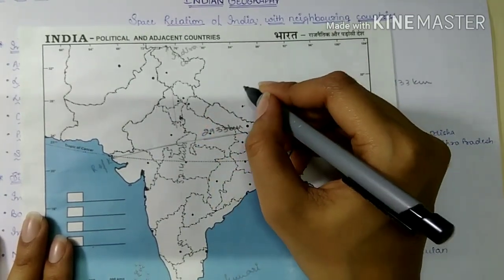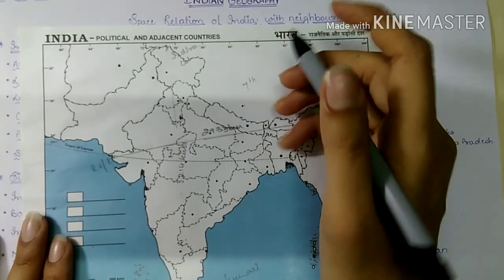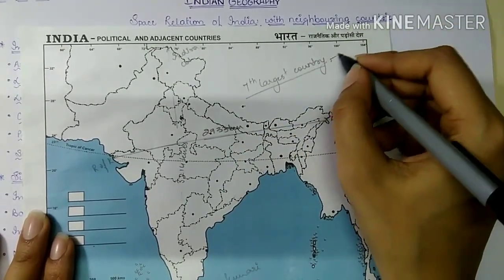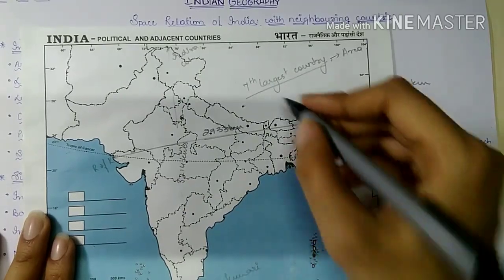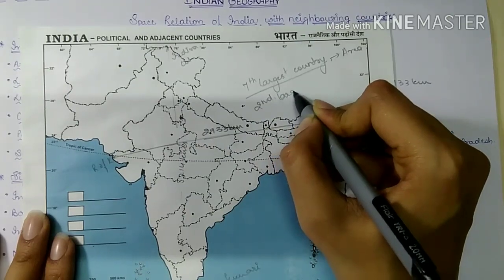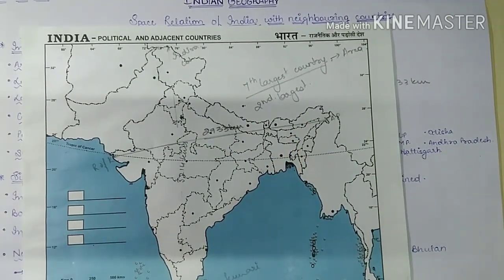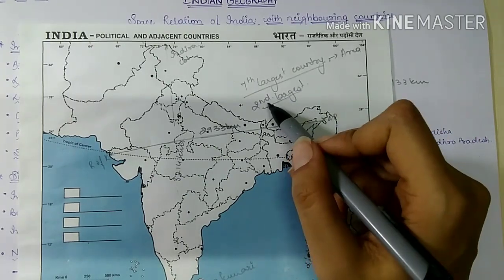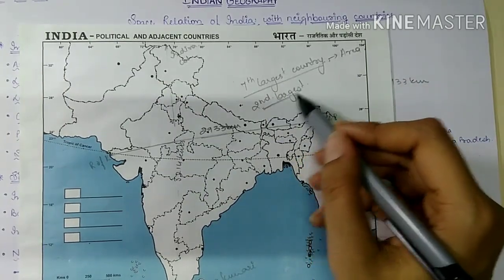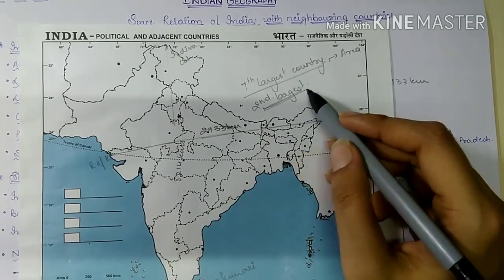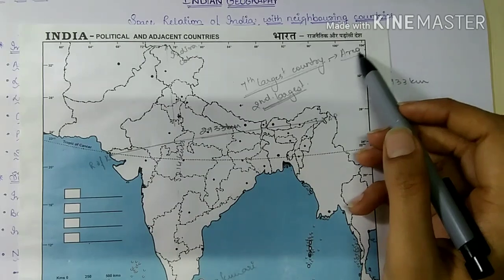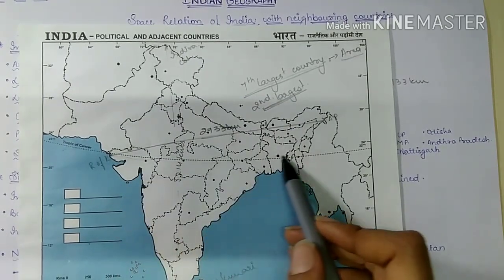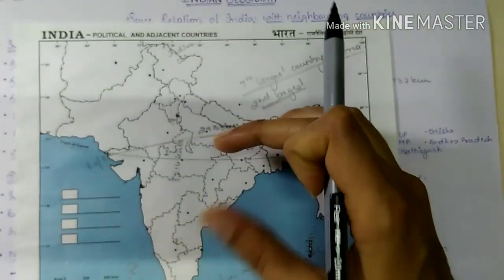Because of its area, India stands as the 7th largest country in the world. According to population it is the second largest, just after China. We can also see that the Tropic of Cancer passes through India, dividing it into two halves.